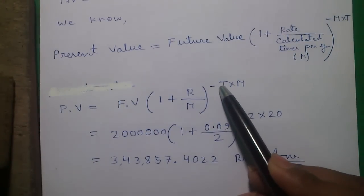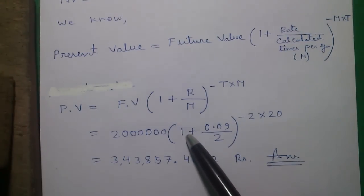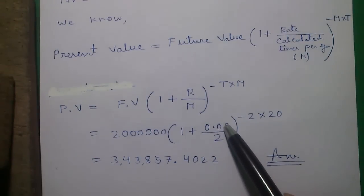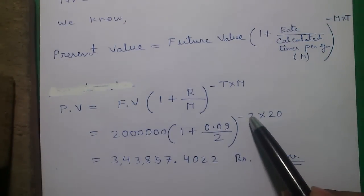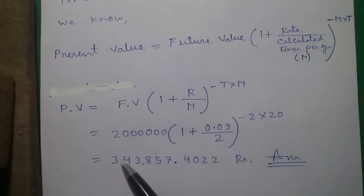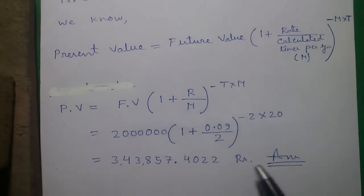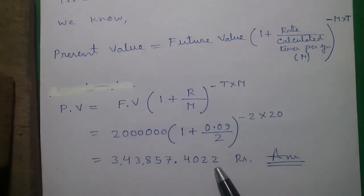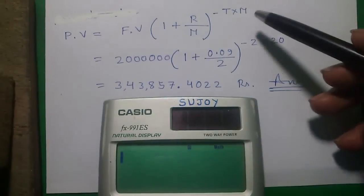To the power minus T or time into M, which is 20 lakhs into 1 plus 0.09, that is our R divided by 2 times per year. So that becomes 3,43,857.4022. So this is our present value. So Mr. Roy should invest this much money in bank to get 20 lakhs after 20 years.